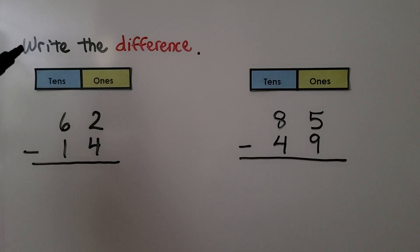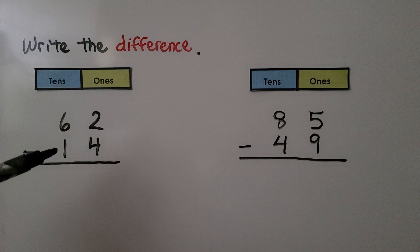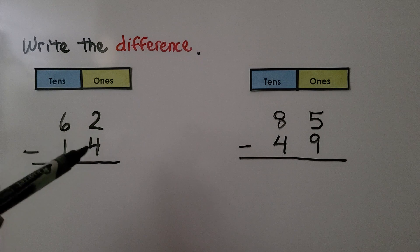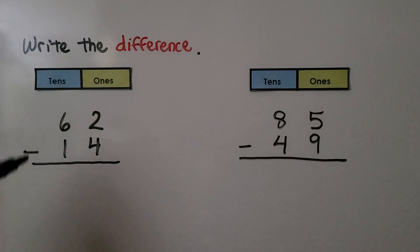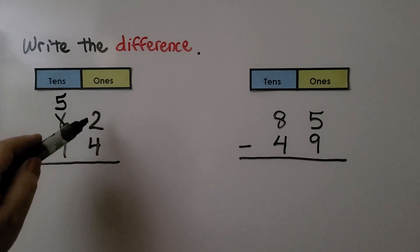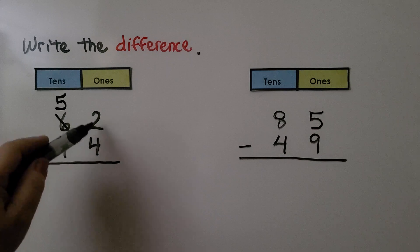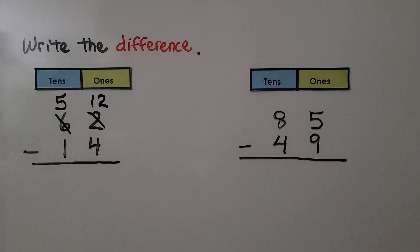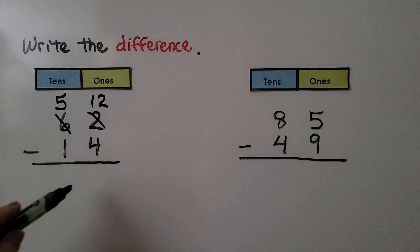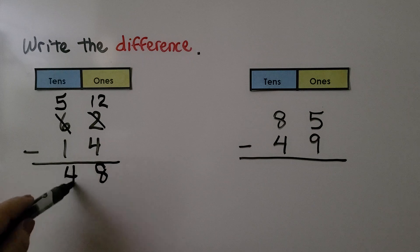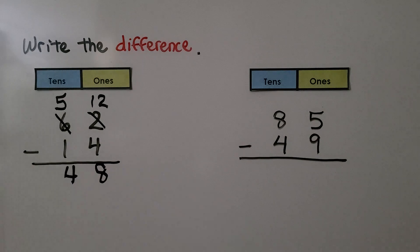It's telling us to write the difference, which means we need to subtract and write the answer. We have 62 minus 14. We start by looking at the ones place — we have 2 ones and we need to take 4 away, so we don't have enough ones. We regroup and turn the 6 tens into 5 tens, and give 10 ones to the ones place. We had 2, so 10 and 2 is 12 ones. 12 minus 4 is 8 ones. Then 5 tens minus 1 ten is 4 tens. 62 minus 14 is equal to 48.